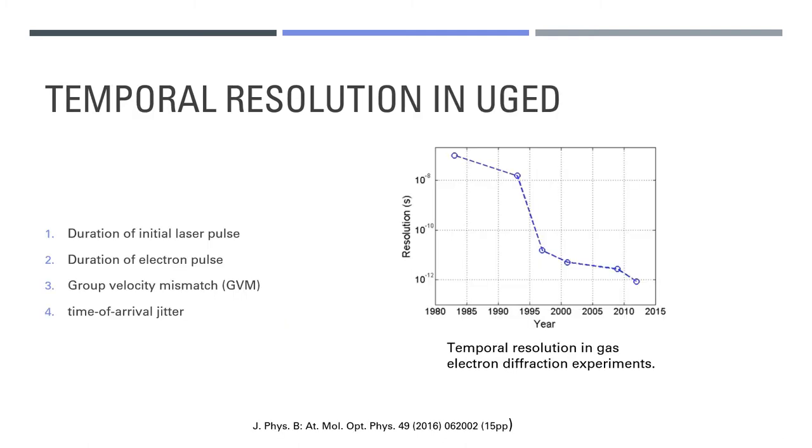There are four factors which determine the temporal resolution in ultrafast gas phase electron diffraction experiments. The first is the duration of the laser pulse which is used to excite the molecules. The second is the duration of the probing electron pulses. The third is the group velocity mismatch between the electron and laser pulses. And lastly, the time of arrival jitter between the electron and laser pulses.